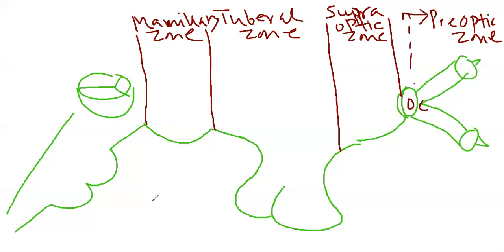In some books, the pre-optic zone and supra-optic zone together are called the anterior part of the hypothalamus. The tuberal zone is also known as the middle part of the hypothalamus, and the mammillary zone is called the posterior part of the hypothalamus. By this way, we can divide the hypothalamus into different zones.